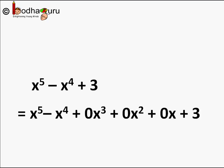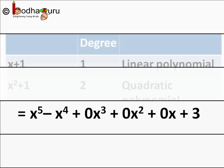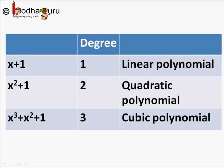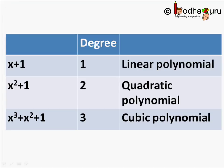Polynomials are also named based on its degree. Like if the degree of a polynomial is 1, it is a linear polynomial like x plus 1. If the degree is 2, that is called a quadratic polynomial like x square plus 1. We call polynomial of degree 3 a cubic polynomial like x cube plus x square plus 1.